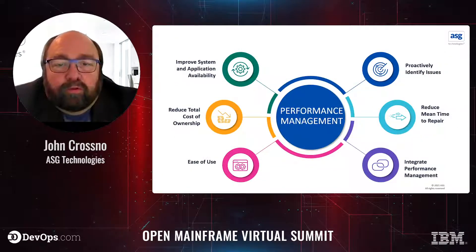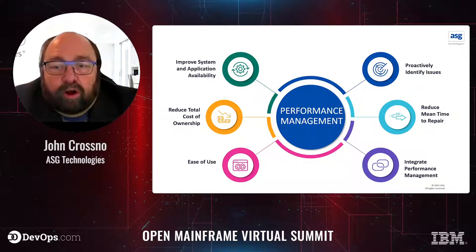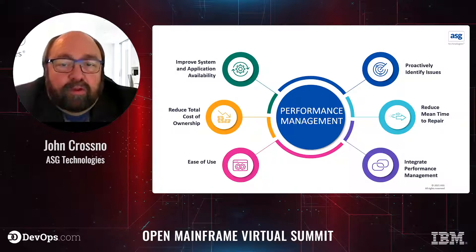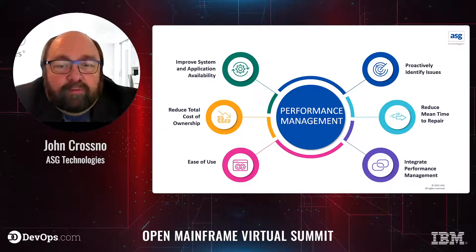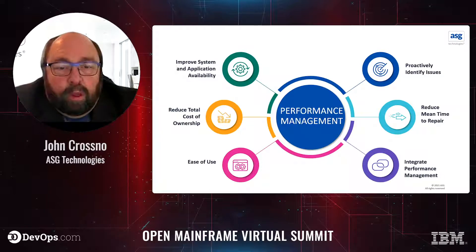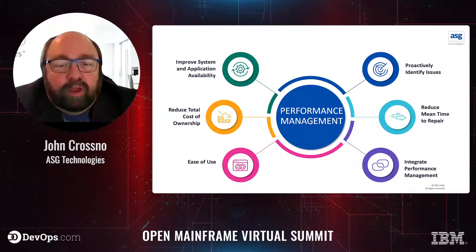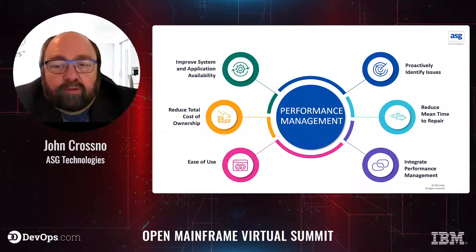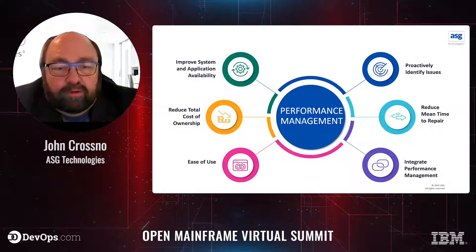The core values for tools used to manage a system's health should include the ability to improve system and application availability through effective performance management and monitoring, proactively identify issues by getting problem notifications, reduce mean time to repair across their systems with views of what's happening and the ability to drill into problem areas, and monitor, analyze, and report on performance across system hardware and software with one set of products. They should provide a common look and feel and allow the user to easily switch between environments, and lower total cost of ownership with easy installation, maintenance, and transferable skills.